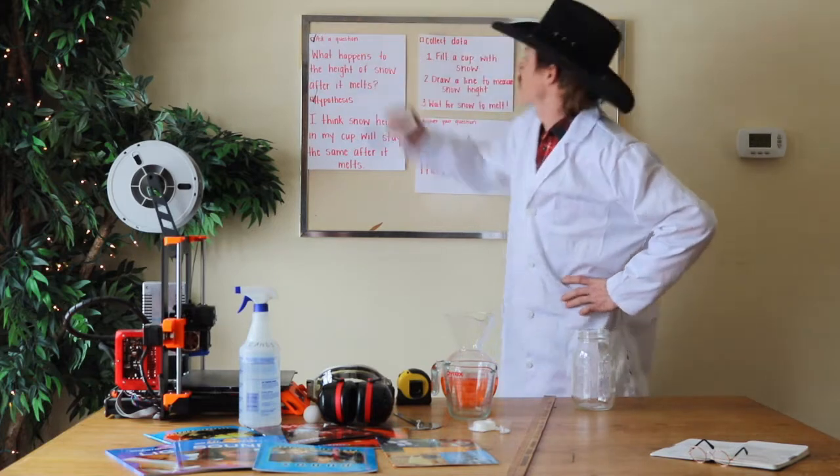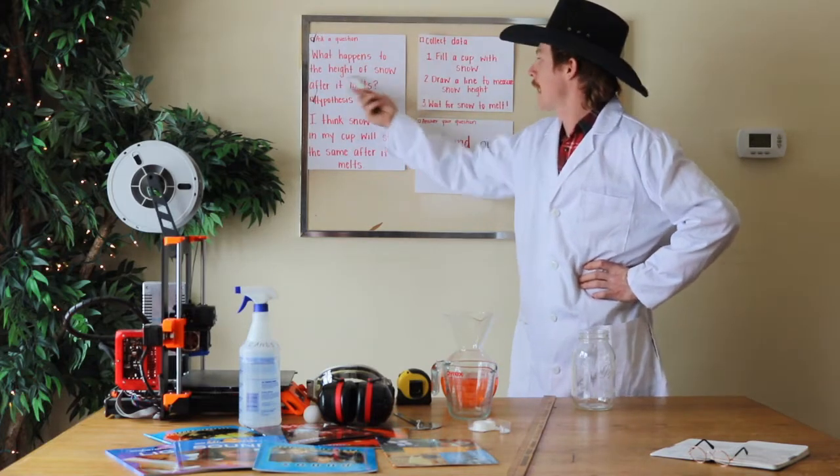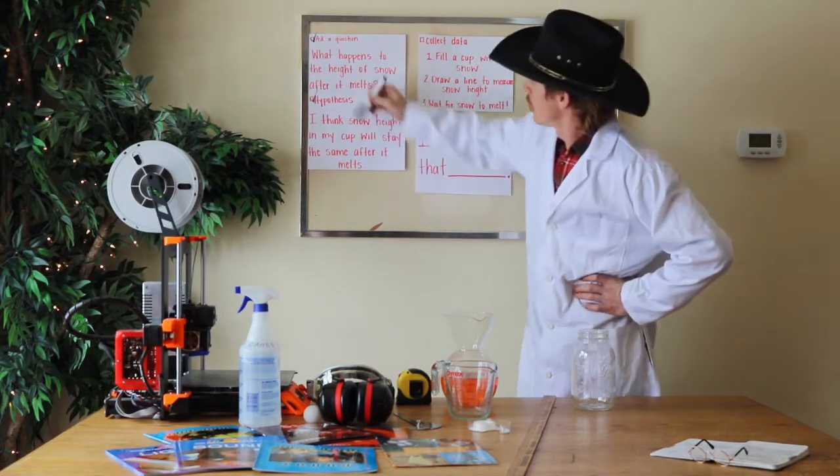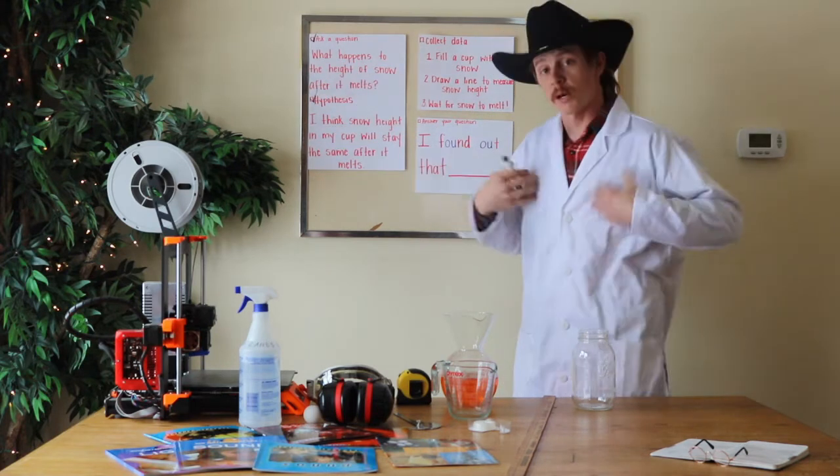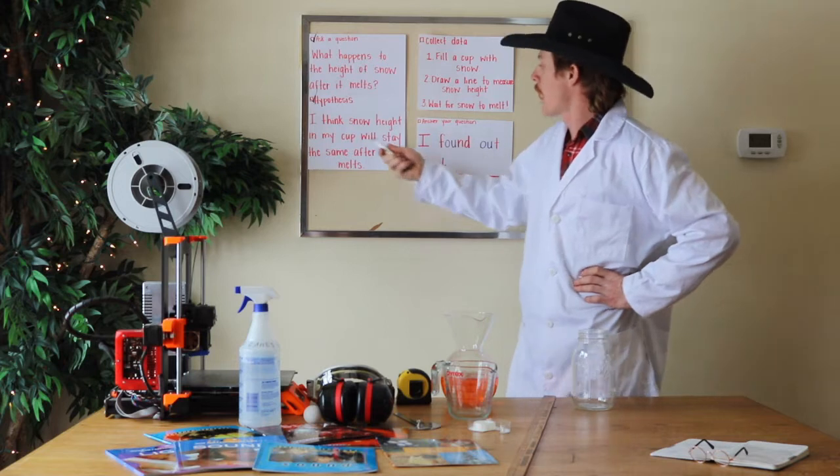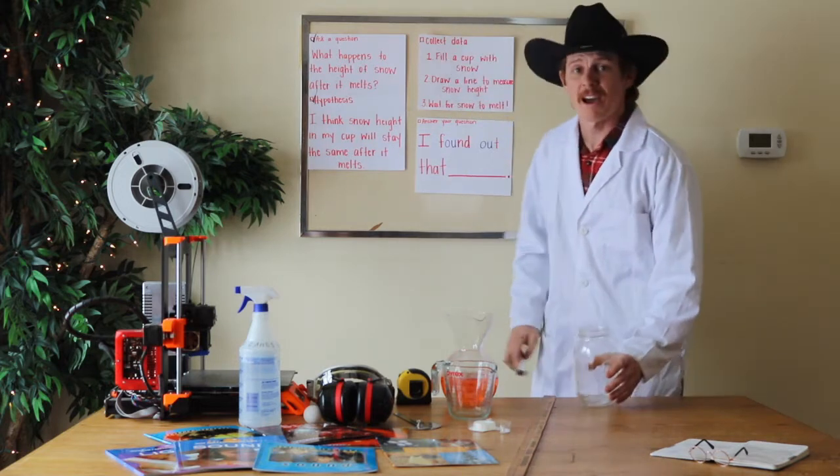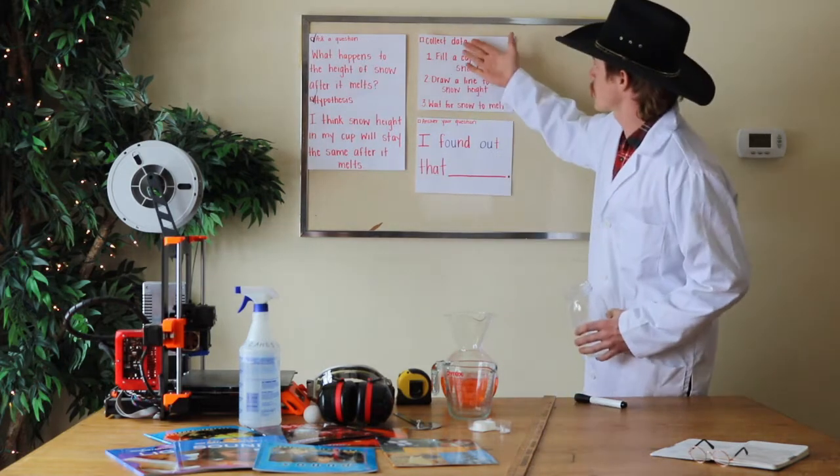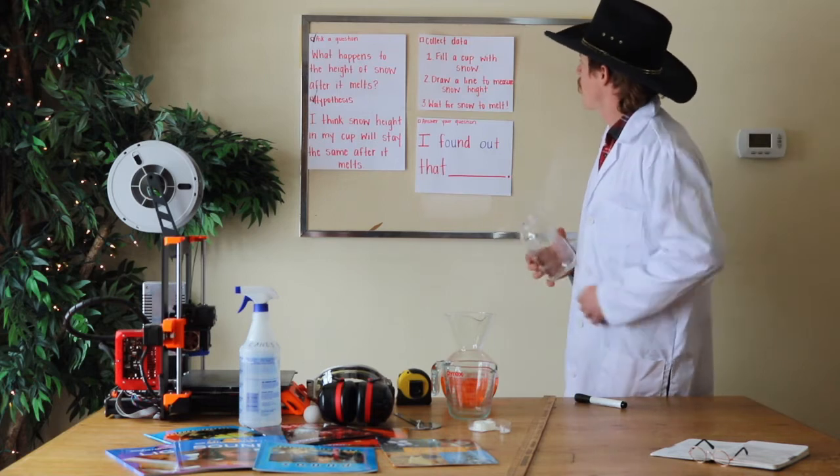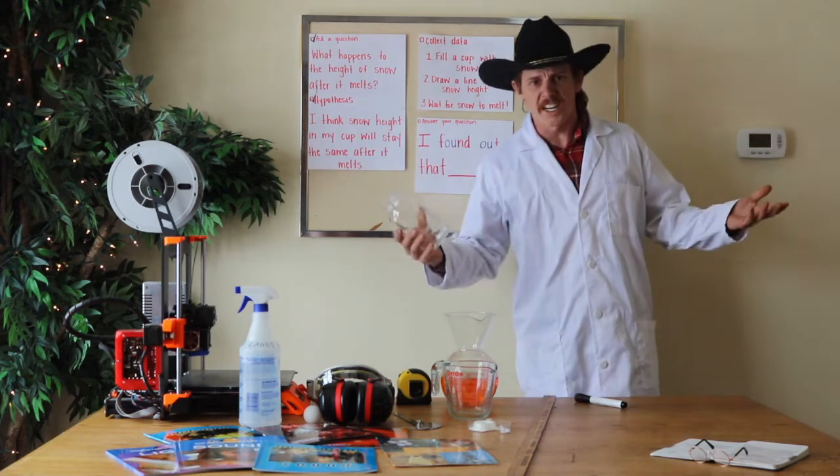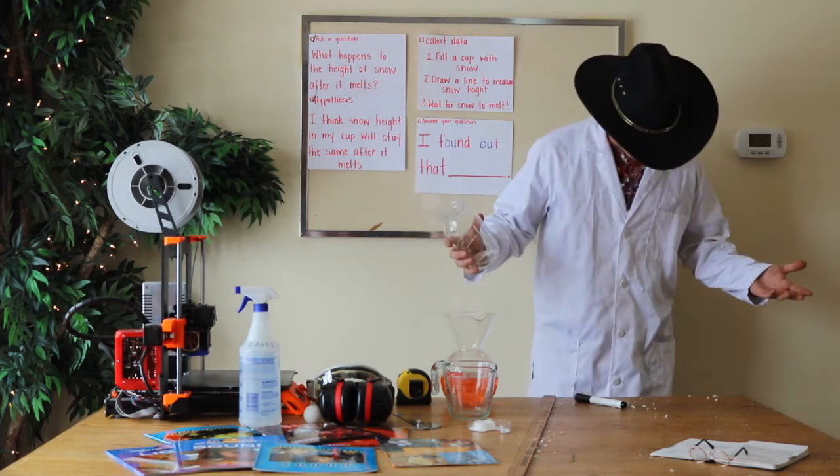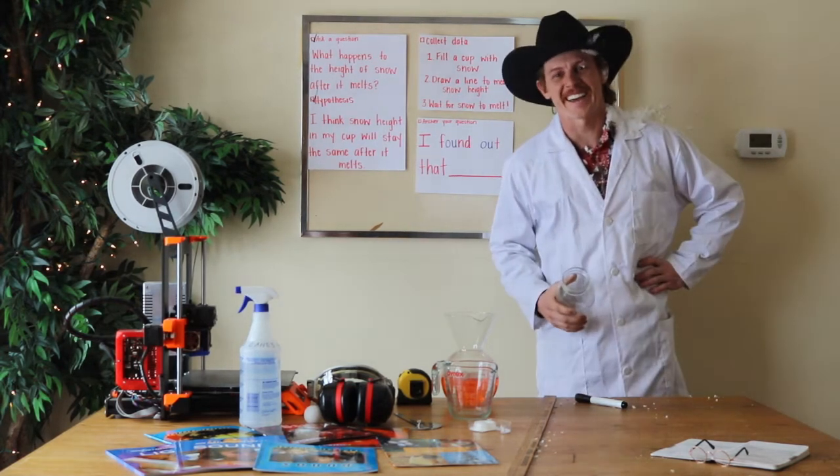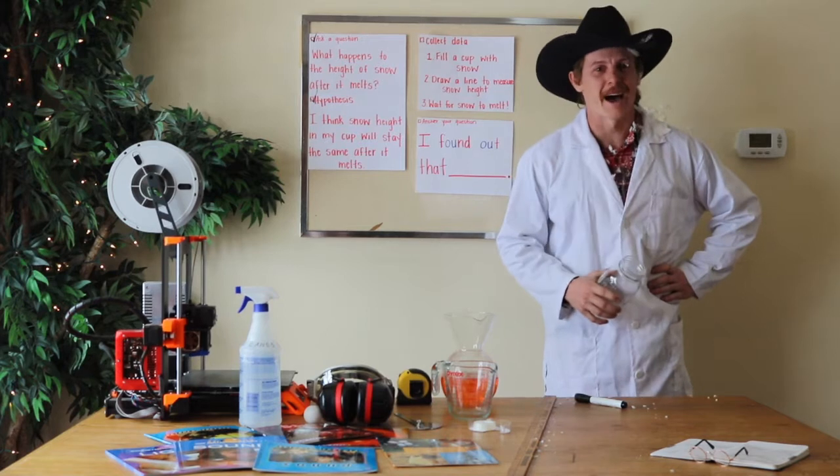We are in our experiment, so there's four parts and we already got two of them done. We have asked a question: what happens to the height of snow after it melts? We have formed our hypothesis. I think personally that the snow height in my cup is going to stay the same after it melts. So here we are at part three: collect the data, fill a cup with snow. So we need to find some snow. Where are we going to get that? Well there's some snow right there, but I reckon it'll be a lot more of it outside.